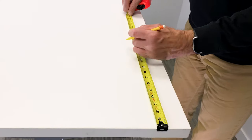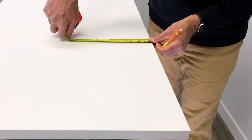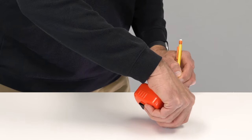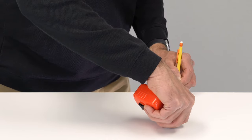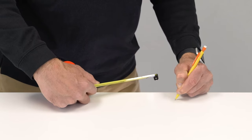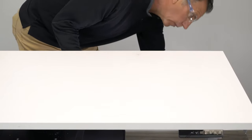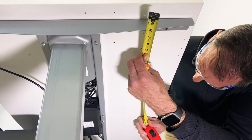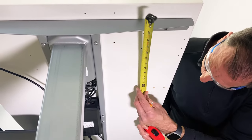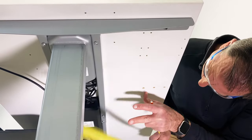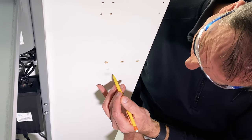Mark on your desktop where you would like the hole. Measure the location and check the bottom side of the top to make sure you won't be drilling through anything like power cables or work surface supports.